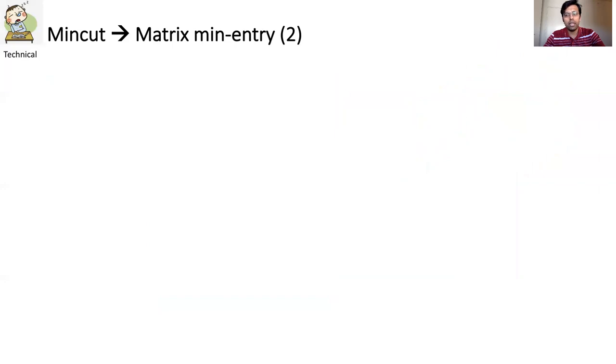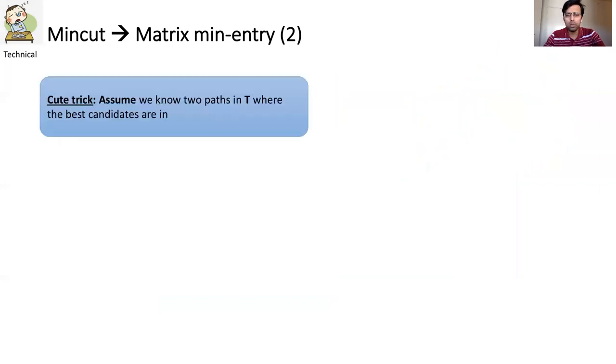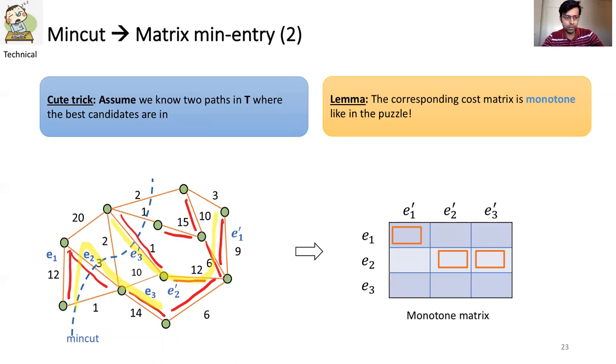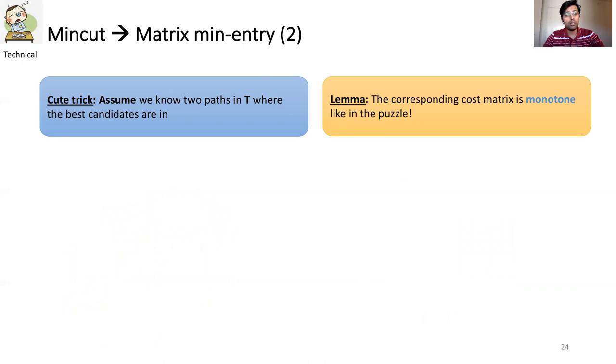As it turns out, there is a way and this is where the matrix min entry puzzle comes handy. Suppose somehow you know the two paths in T where the best candidates are in. If you consider the cost matrix where the rows are indexed by the edges of one path and the columns are indexed by the edges of the other path, then the cost matrix turns out to be monotone. In the figure, the two paths are e1, e2, e3 and e1 prime, e2 prime, e3 prime. We have seen before that for such a monotone matrix, you do not need to query all entries to find out the minimum. So you only need to query linear number of entries, linear in the length of the shortest path to find out the minimum. There is a log term here which I will conveniently ignore. Now the question boils down to how do you find such a pair of paths?